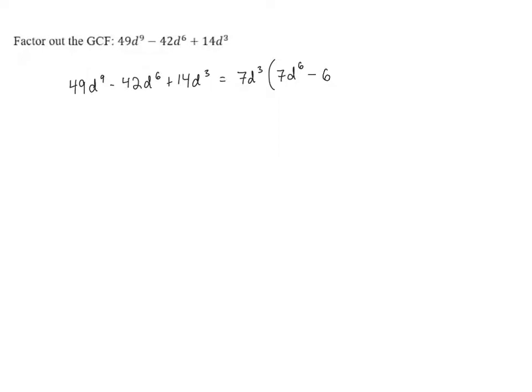And d to the 6th divided by d cubed is d cubed. Again, when we're dividing powers of a variable, we need to subtract the exponents. So d to the 6th divided by d cubed is d cubed.